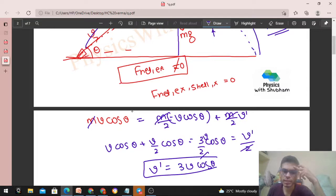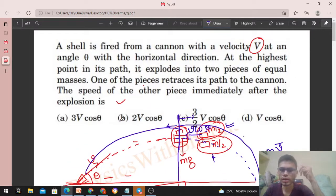So V dash is equal to 3V cos theta, right? So this way you can easily solve it. So which option? Option A, right? Fine.